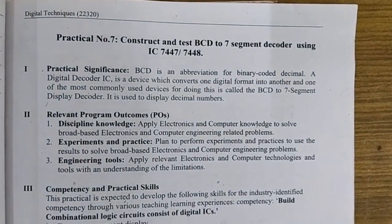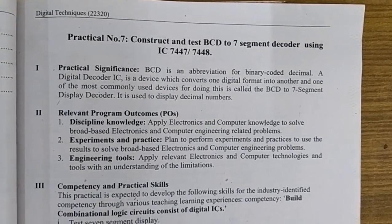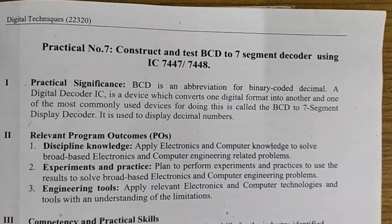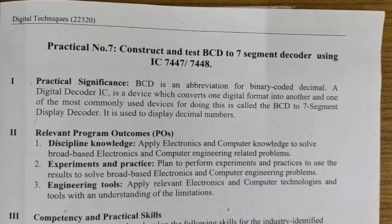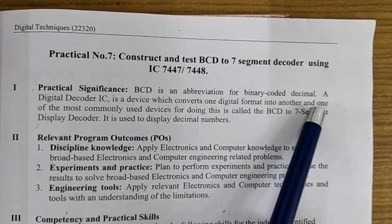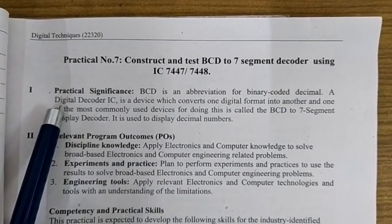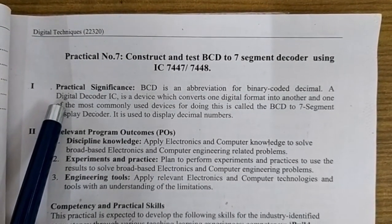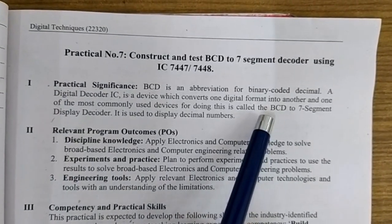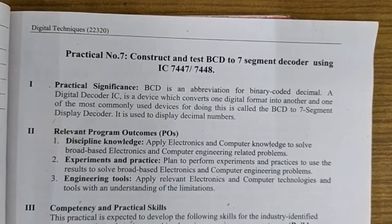Welcome to this practical of the digital techniques subject. This is practical number 7, where we have to construct and test a BCD to 7-segment decoder using IC 7447 and IC 7448. BCD stands for binary coded decimal. IC 7447 will be used to convert the applied BCD number into the corresponding 7-segment display code.